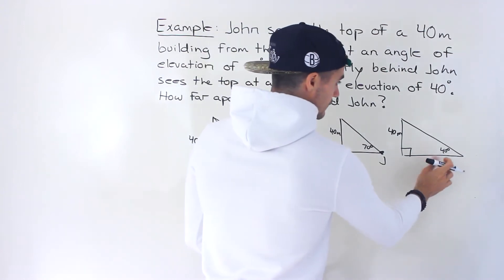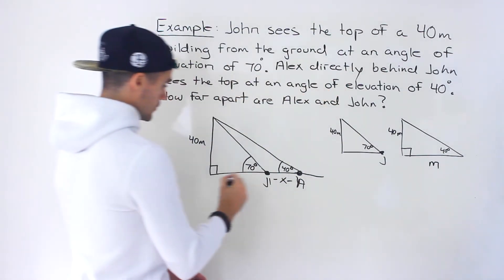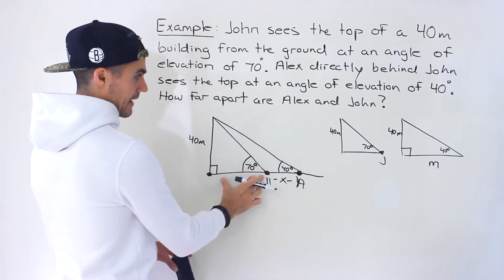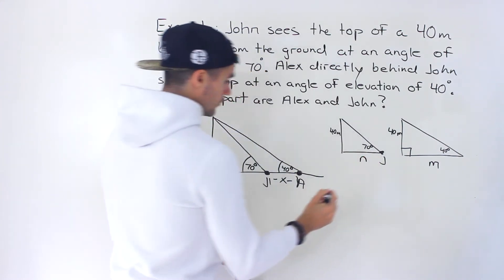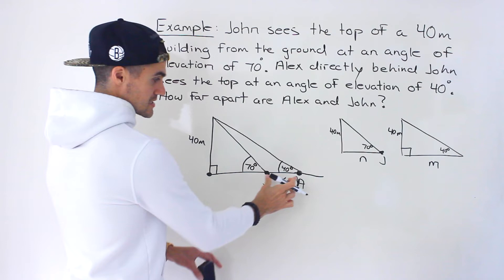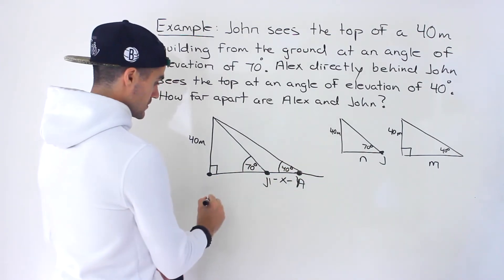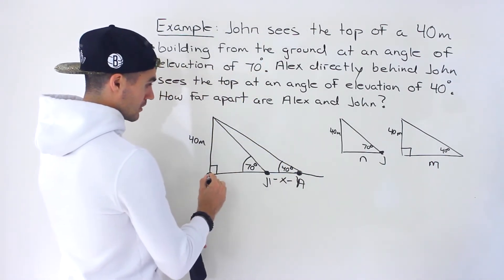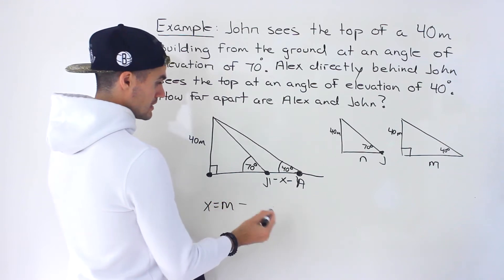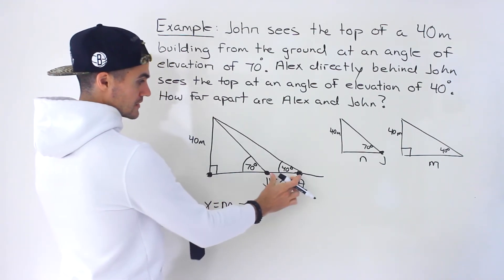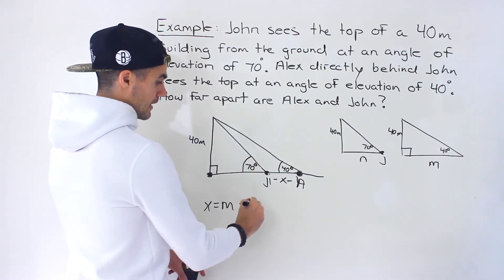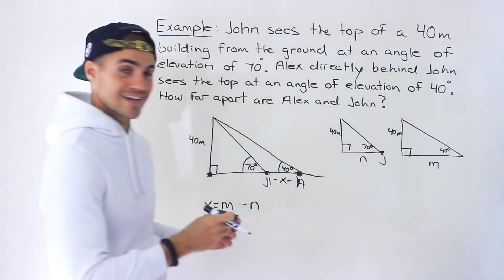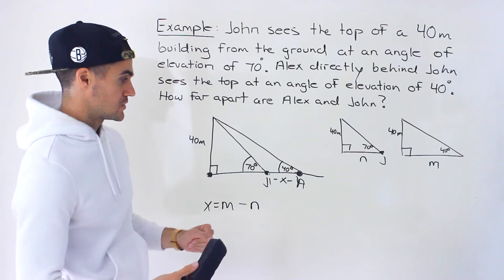If we could find the length of this side, let's call it M, which would be the length from here to here on the diagram. And then if we could find this length, which would be this length here, N. Well, notice that this X value, the distance between Alex and John is just going to be the difference between those. It's going to be this M value, which is the longer length. So from here to here minus the N value, this length right here. And then the difference is going to give us that X value. And so if we could find the values for M and N, which we can do with these two triangles, then we could take the difference between them to find the distance between John and Alex.